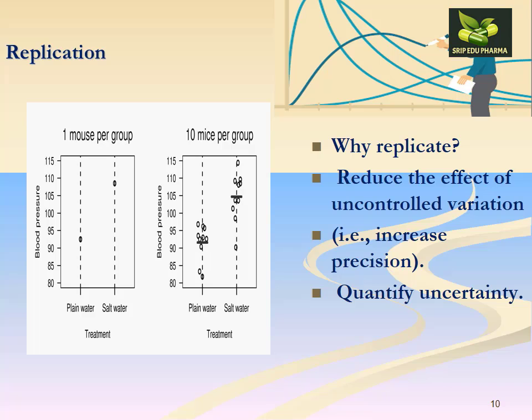Replication is required in statistics because it reduces the effect of uncontrolled variation, increases the chances of precision, and also quantifies the uncertainty that may arise in our experiment.